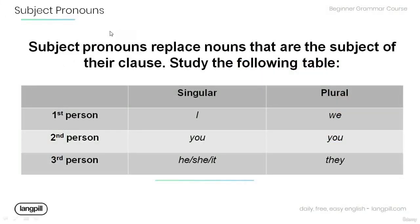Note that subject pronouns replace nouns that are the subject of their clause. Have a look at the table below. When we talk about the first person in its singular form we use 'I,' and in plural 'we.' For the second person we use 'you,' and in its plural form the same 'you.' For the third person we use 'he,' 'she,' 'it,' and in plural 'they.'